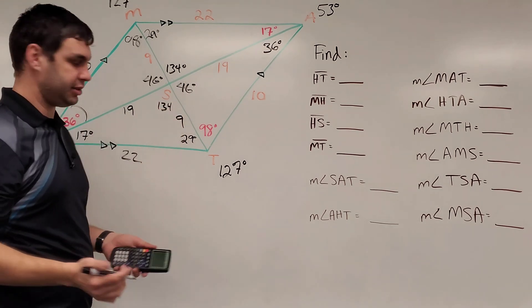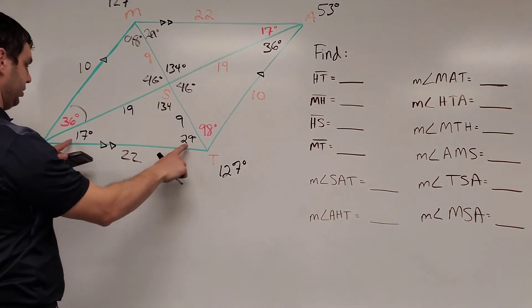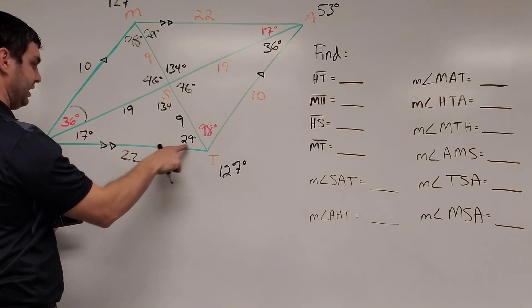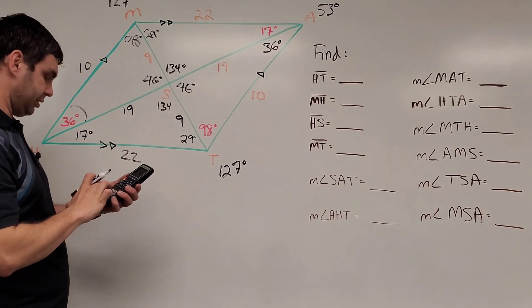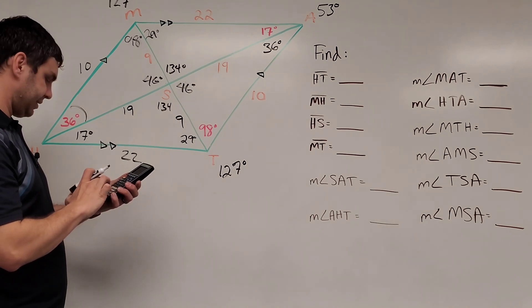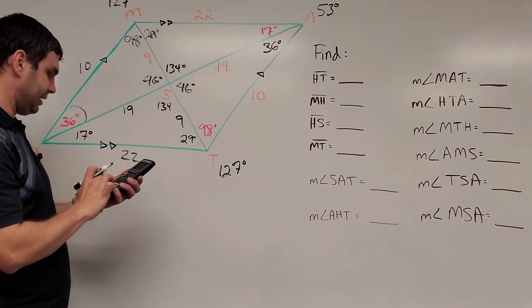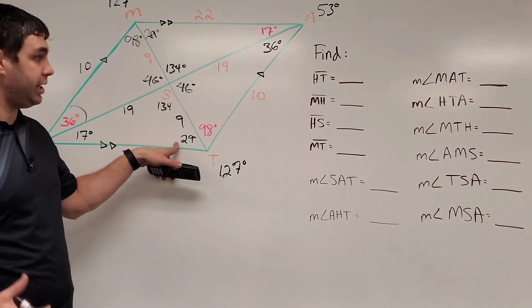And just to double check, let's take like this bottom one for example. I should be able to add up 134, 17, and 29. That should give me 180 degrees. Let's see if it works. 134 plus 17 plus 29. Yes, it does, 180 degrees. Okay?